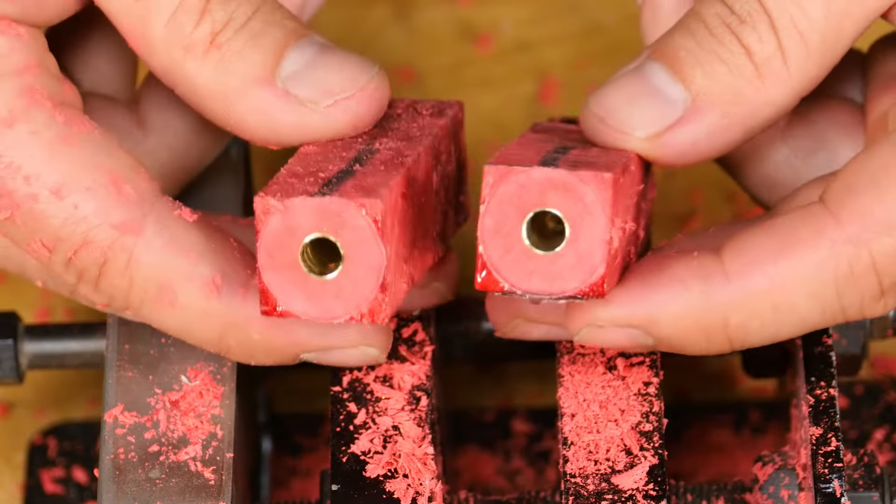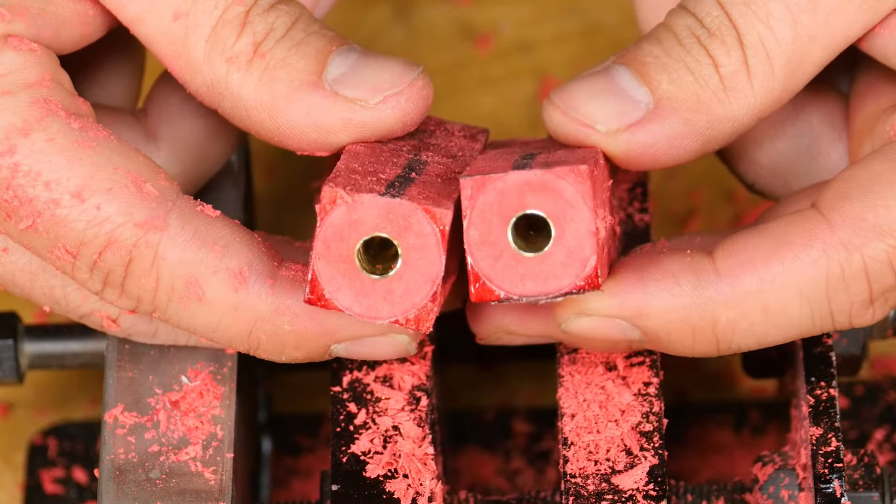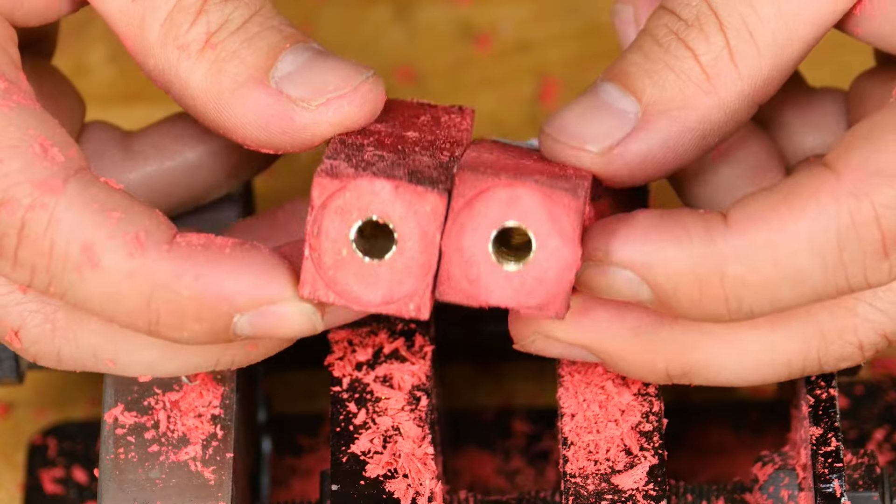Repeat with the second blank and when you're finished, the blanks should look like this. Now that the blanks are glued and trimmed, we can mount them on the lathe.